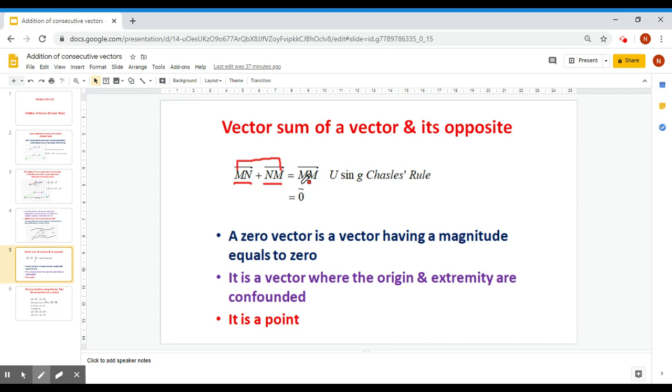But MM means the origin and the extremity are confounded. If the origin and the extremity are confounded, then the vector is a point. And the magnitude of a point is equal to zero. So a zero vector is a vector having a magnitude equal to zero. It's a vector where the origin and the extremity are confounded, which is a point.